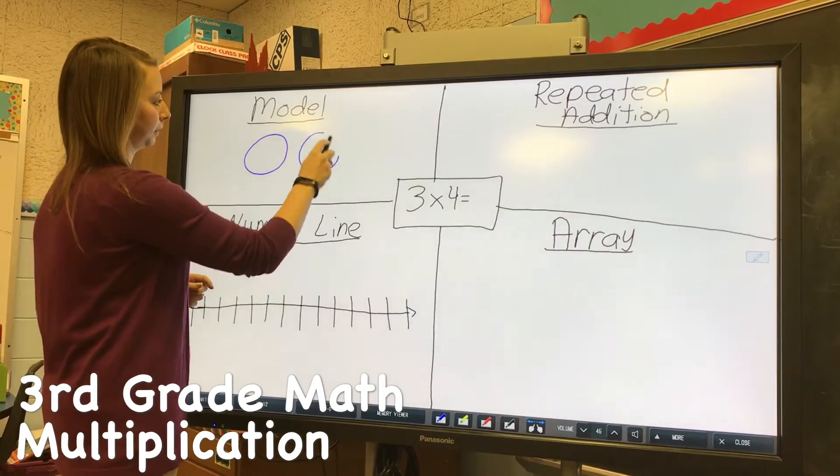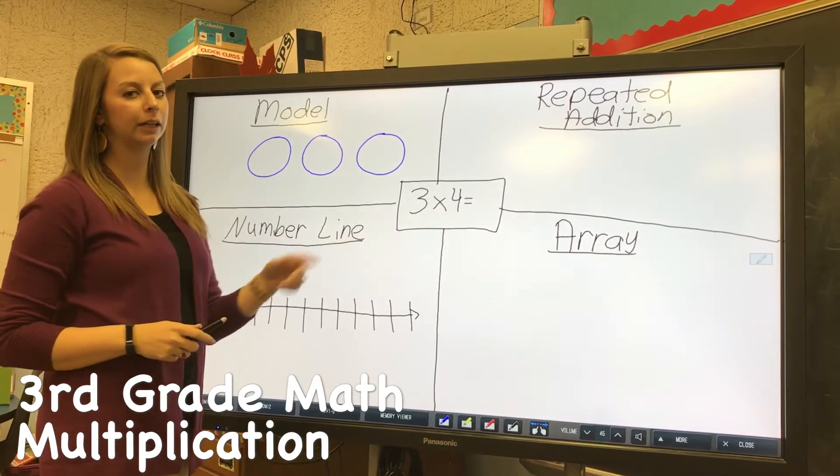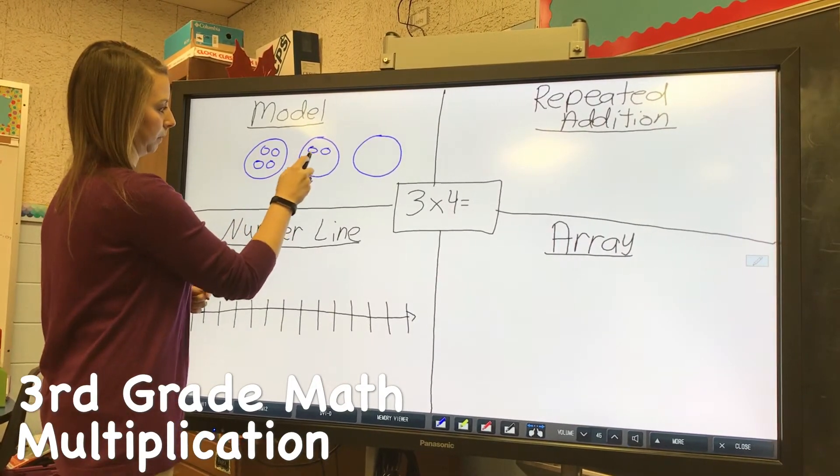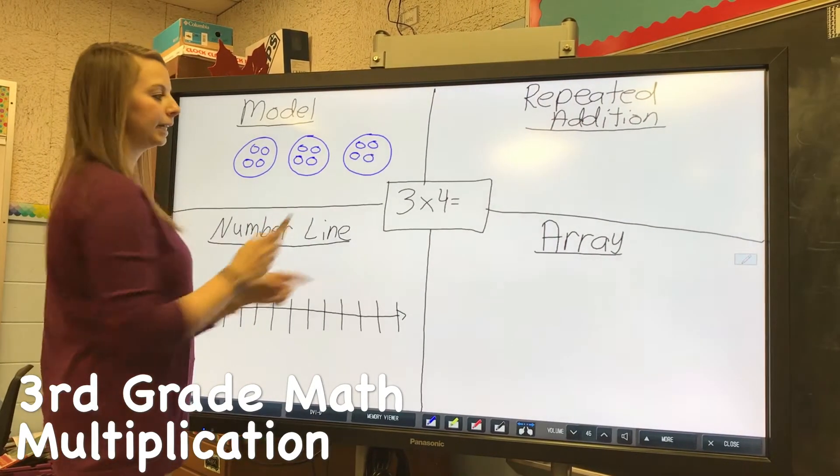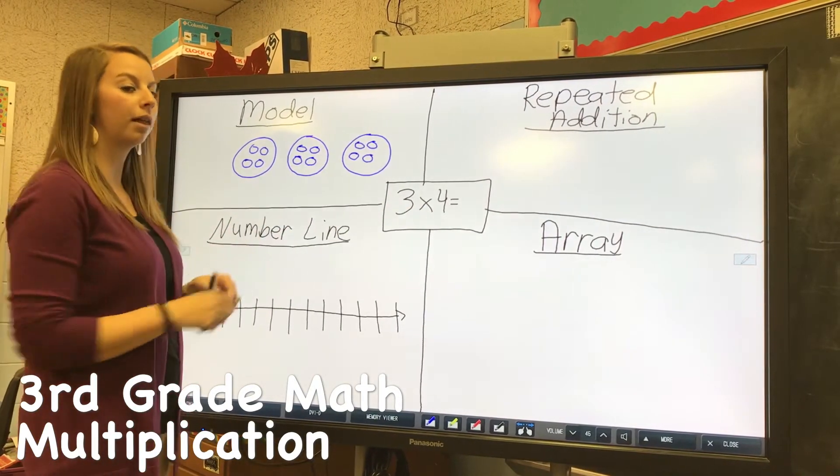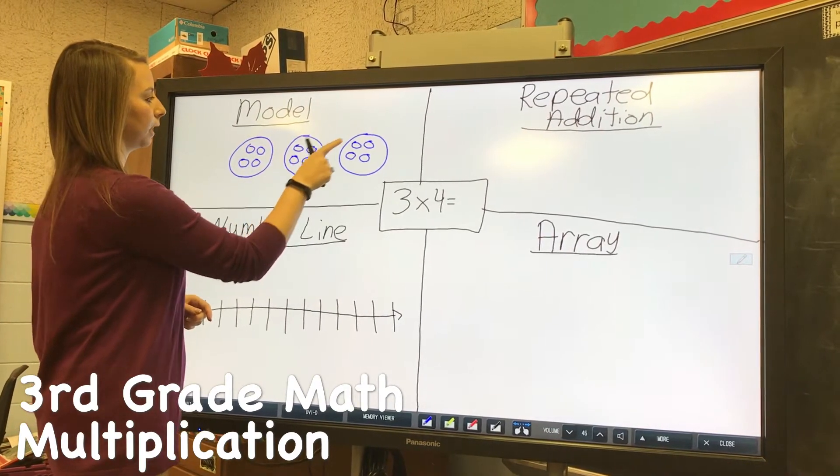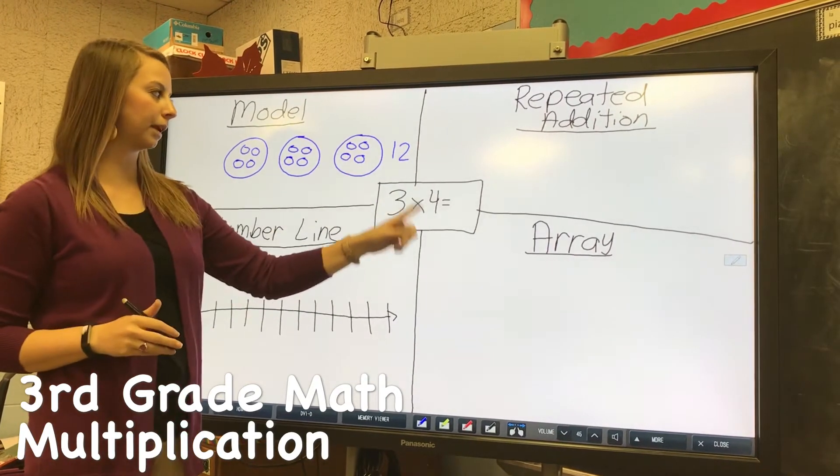I would draw three groups, and the second number tells you how many are in each group, so I'm going to put four in each group. To get the answer you just count them all up: one, two, three, four, five, six, seven, eight, nine, ten, eleven, twelve. So that shows you that 3×4 equals 12 using the model.